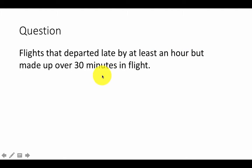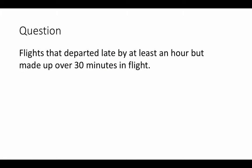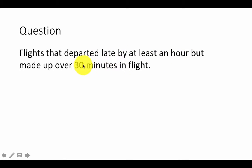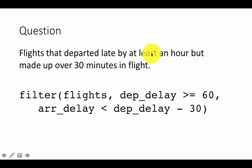For flights that departed late by at least an hour but made up more than 30 minutes in flight: departure delay must be >= 60 minutes. 'Made up 30 minutes in flight' means the arrival delay is less than the departure delay minus 30. For example, if a flight left late by 120 minutes but made up over 30 minutes, its arrival delay must be <= 90 minutes. So: filter(flights, dep_delay >= 60, arr_delay < dep_delay - 30).